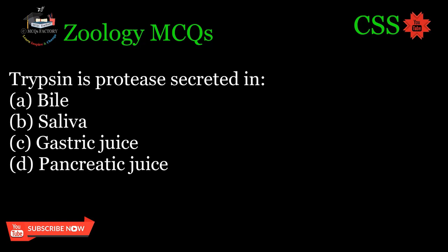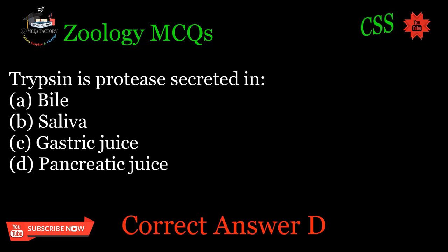Trypsin is a protease secreted in: A. Bile, B. Saliva, C. Gastric juice, D. Pancreatic juice. Correct answer: D.